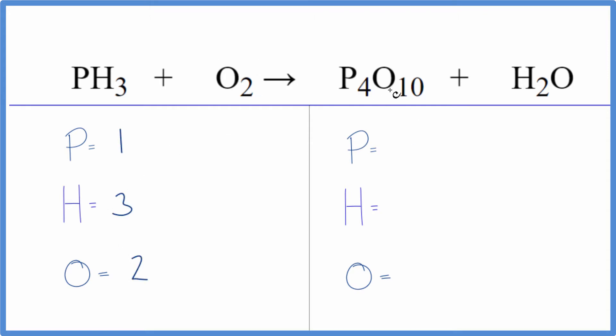On the products we have four phosphorus atoms, two hydrogens. Here's where people have problems: we have ten oxygens but we also need to count this one out here, so we have eleven oxygen atoms. That's what makes this a little bit different.